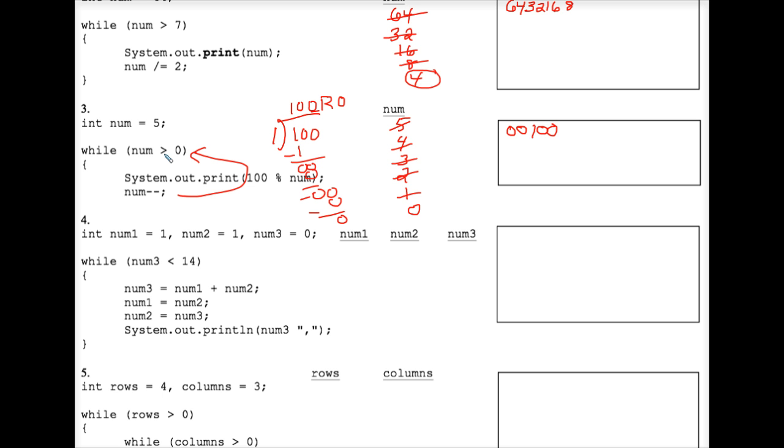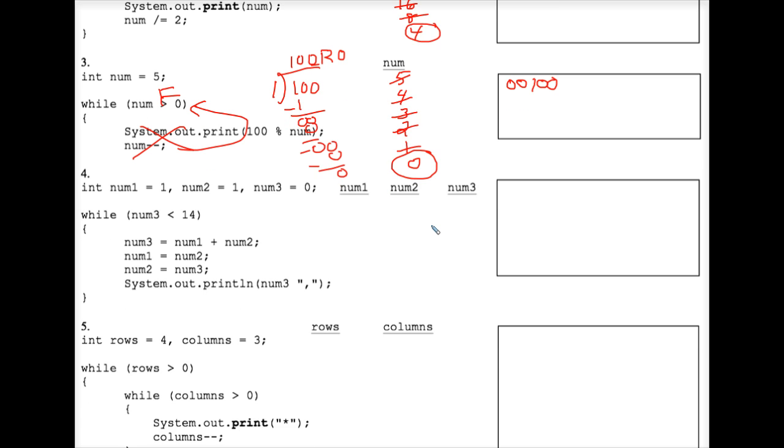And 0 is not greater than 0, so we finally get a false, and we are finished. That is the precise output there. 0, 0, 1, 0, 0. Circling our final value there stored in the variable num.